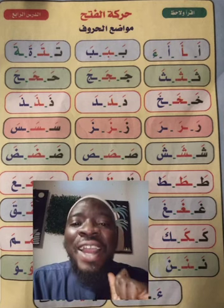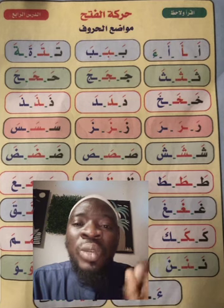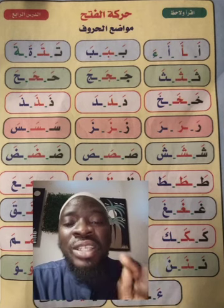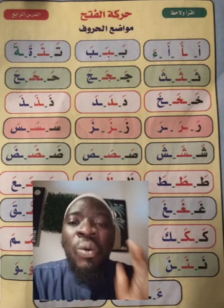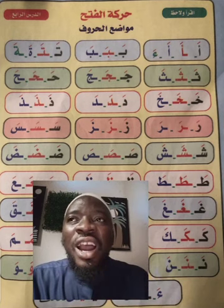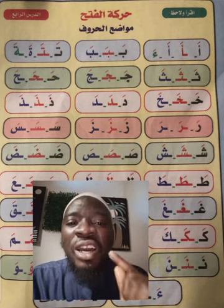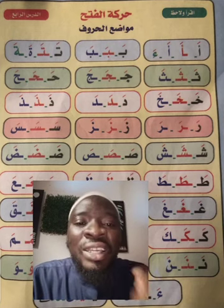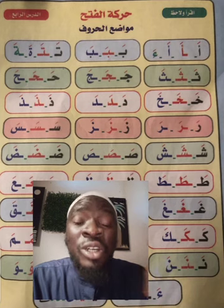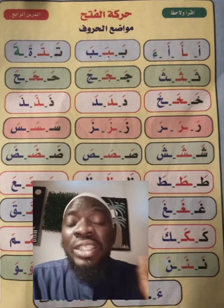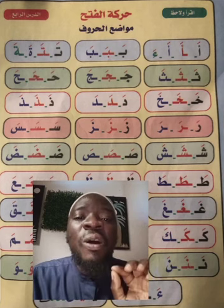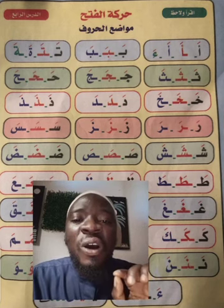Then the letter Ha. Ha is also like Jim — it has the same shape, but the difference is that Jim has one dot under while Ha has no dot. You can see HA, HA — Fathah HA, HA. Then the next letter is Kho. The letter Kho has one dot above, unlike Jim which has the dot under. So Kho with Fathah: HA, HA, HA.